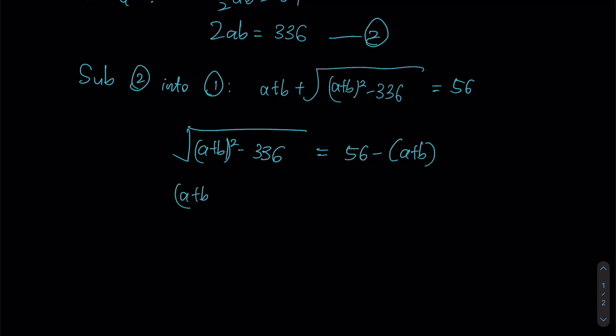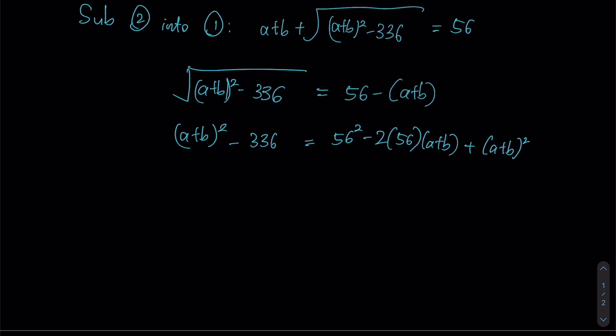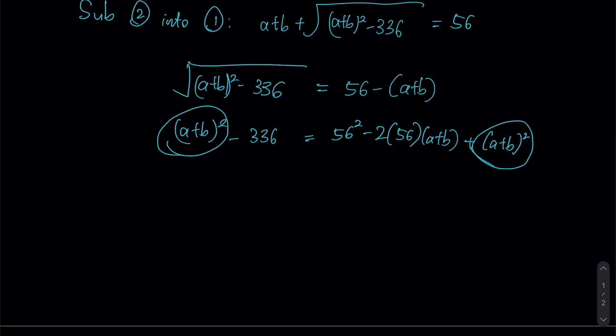Squaring both sides, we have A plus B squared minus 336 equals to 56 squared. We want to see this expression as A minus B. So our identity tells us that this gives us A squared minus 2AB plus B squared over here. So minus 2 times 56 A plus B plus A plus B squared. Now notice that these two terms are present on both sides of our equation, so they can cancel out, and then we are left with this: 56 squared minus 112 A plus B.